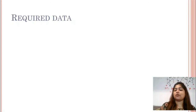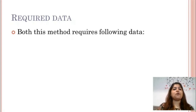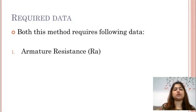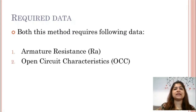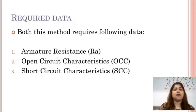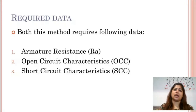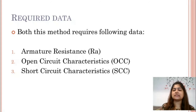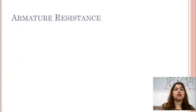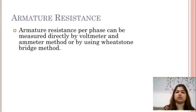For both these methods the common data required is: armature resistance, open circuit characteristics, and short circuit characteristics. Whether you want to find out voltage regulation by the EMF method or the MMF method, in both methods you will need this data. Armature resistance per phase can be easily measured using either the voltmeter-ammeter method or the Wheatstone bridge method.